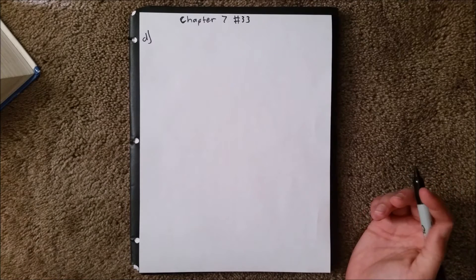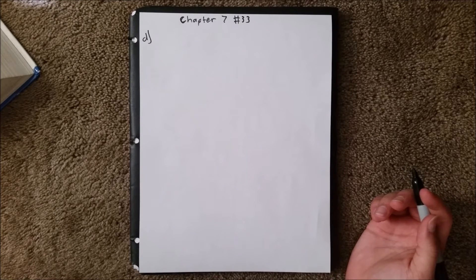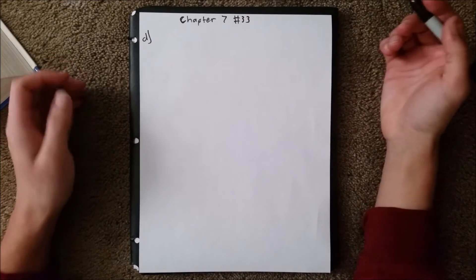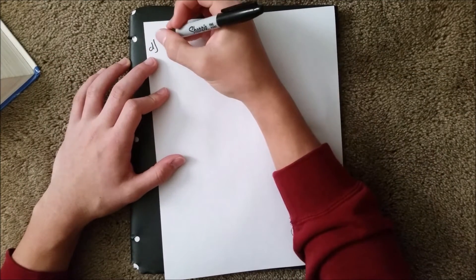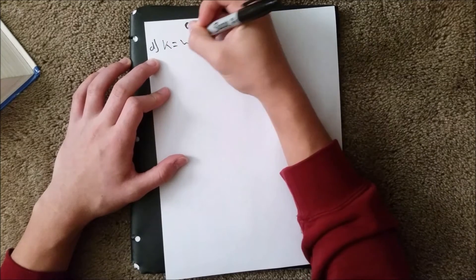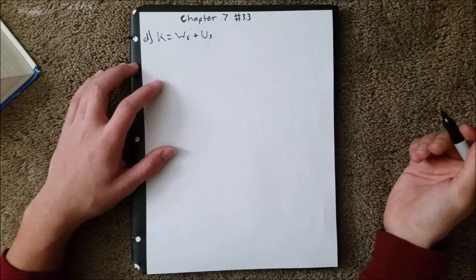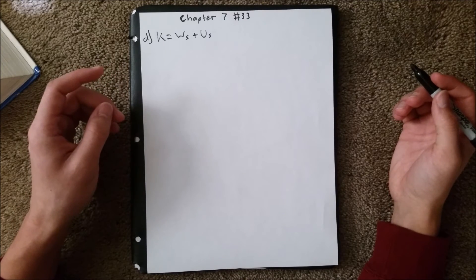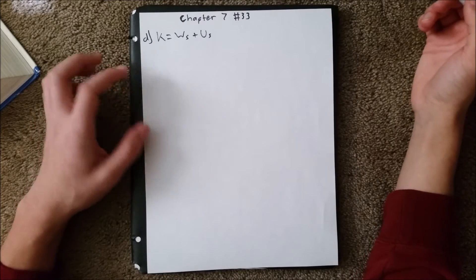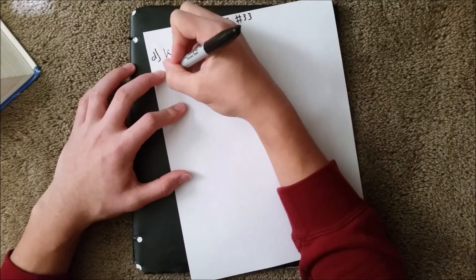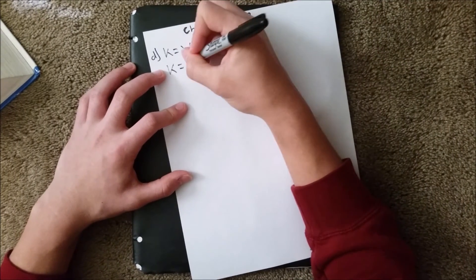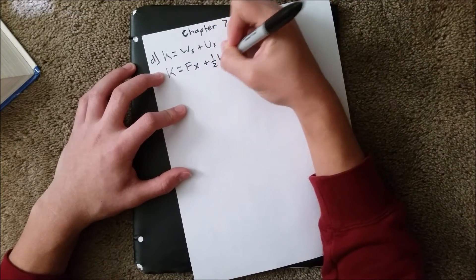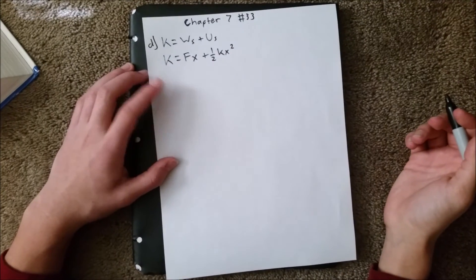Now for part D, it asks what the block's position is when its kinetic energy is maximum. Since we're looking for kinetic energy and we're using a spring, we're going to use the same equation we started with, which is K equals work plus potential energy of the spring. This time, since we're looking for the maximum, the velocity will not be 0, so we're going to need kinetic energy in this equation. We will rewrite this with the values from the last equation: force times distance, which in this case I'm just going to write as x, plus 1 half kx squared. That is our kinetic energy equation.